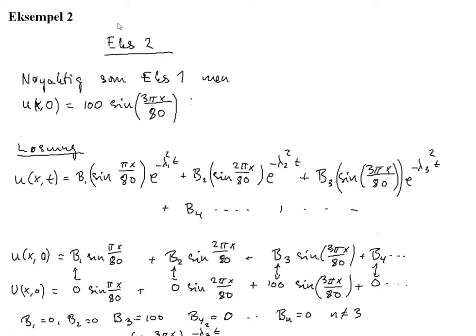We are going to consider another example. This example is the same as the previous example with the only exception that the initial temperature is 100 sin 3 pi x over 80.